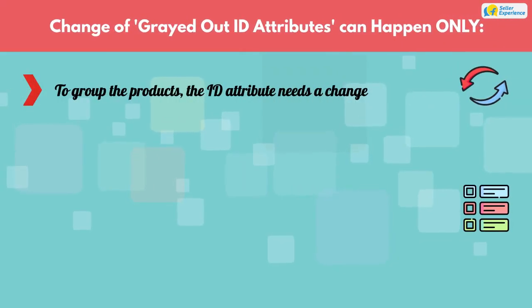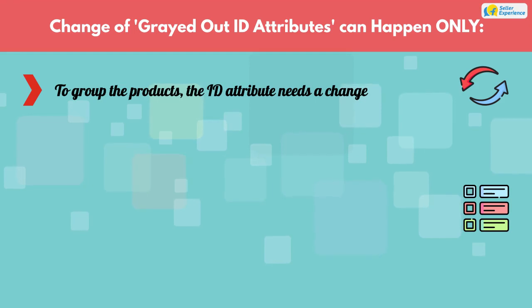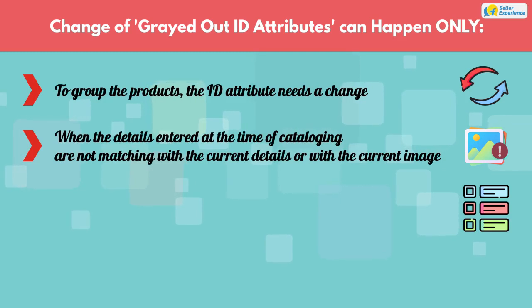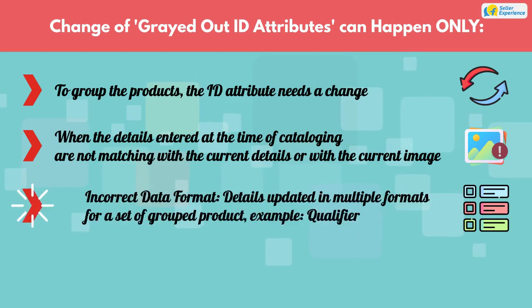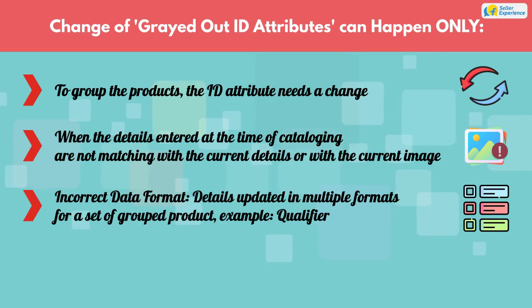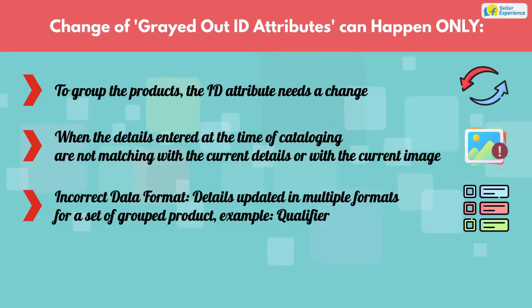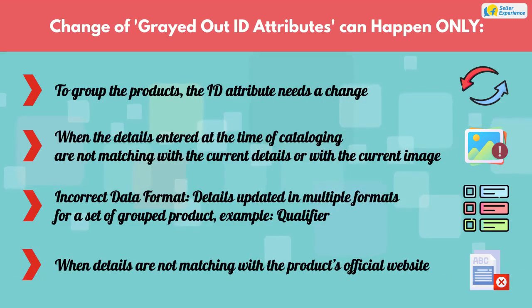To group the products, the ID attribute needs a change. When the details entered at the time of cataloging are not matching with the current details or with the current image. Incorrect data format, such as details updated in multiple formats for a set of grouped products — for example, qualifier. When details are not matching with the product's official website.